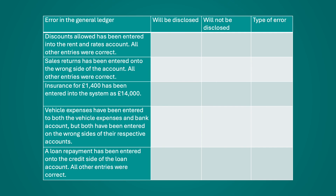Now let's look at some examples and identify whether the errors shown would or wouldn't be disclosed by the trial balance, and if not, what type of error they are. First: discounts allowed has been entered into the rent and rates account, with all other entries correct. Both discounts allowed and rent and rates are expense accounts. This would not cause an imbalance and therefore would not be disclosed. Since it has simply been entered into the wrong account of the same type, this is an error of commission.